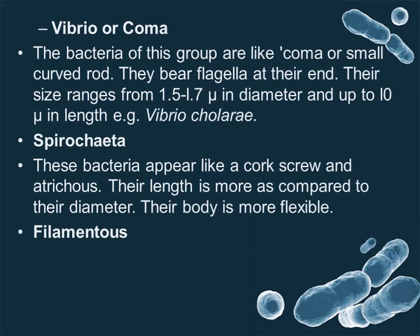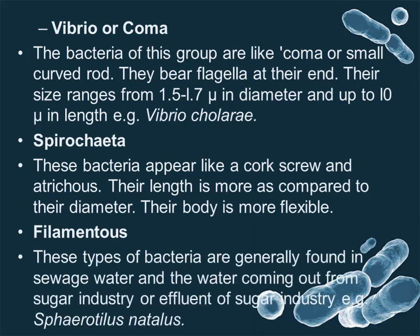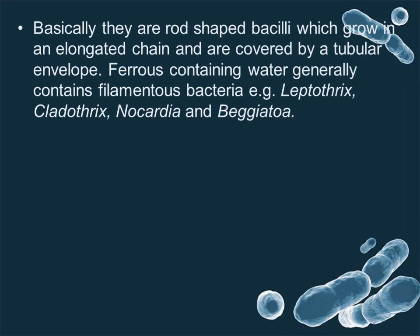Filamentous bacteria: these types of bacteria are generally found in sewage water and in effluents from the sugar industry, for example, Perotillus natalus. Basically, they are rod-shaped bacilli which grow in an elongated chain and are covered by a tubular envelope. Iron-containing water generally also contains filamentous bacteria.